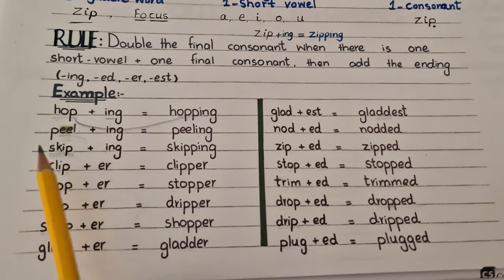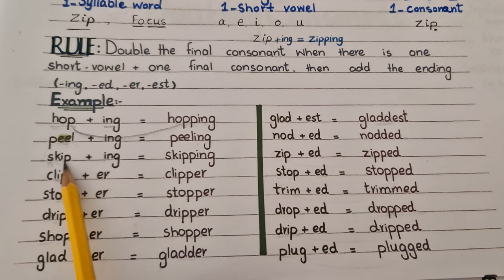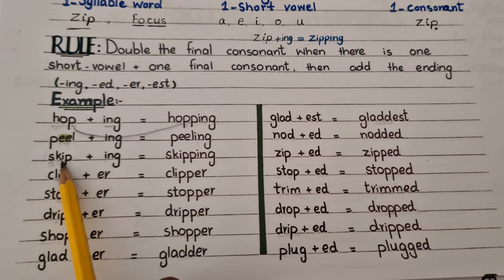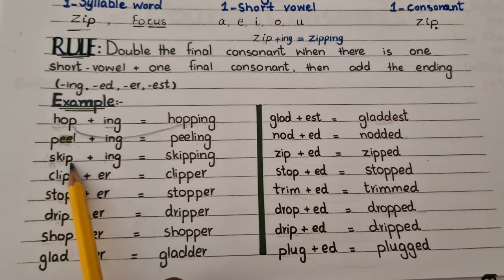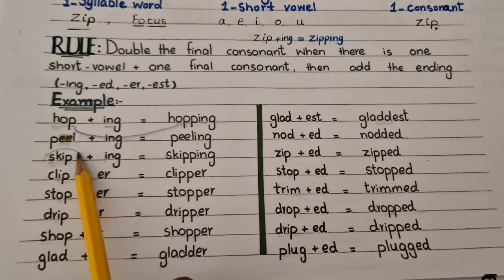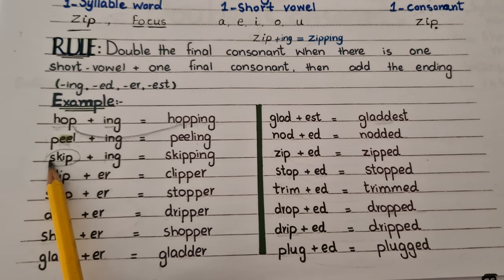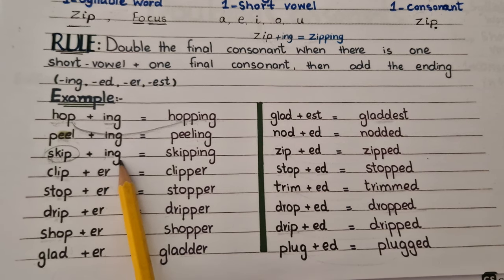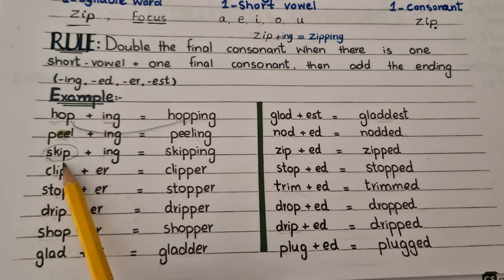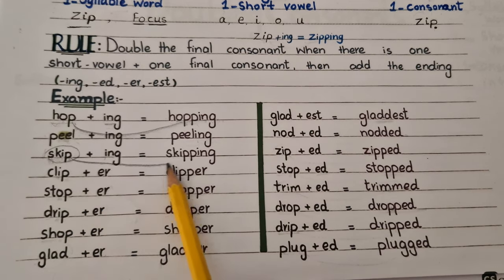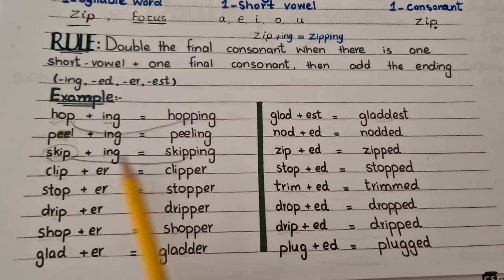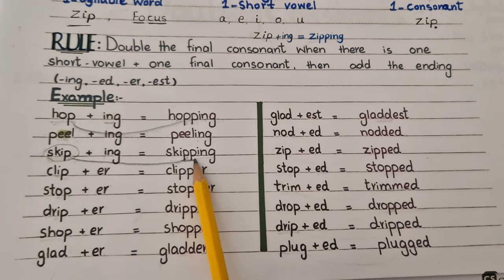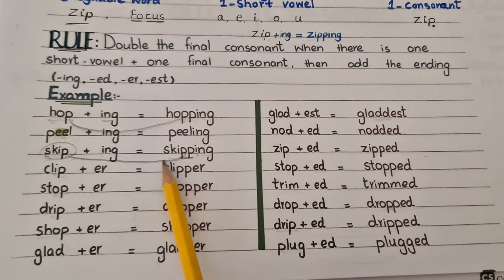'Skip'. Skip is a one-syllable word, and it also has one short sound and a consonant at the end of the word. So this word follows the 1-1-1 rule. When we add -ing at the end of the word, we will double the final consonant. 'Skip' becomes 'skipping' — we double the final consonant P.